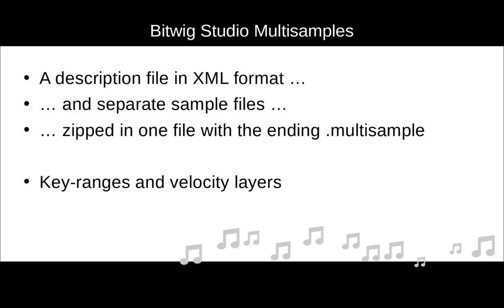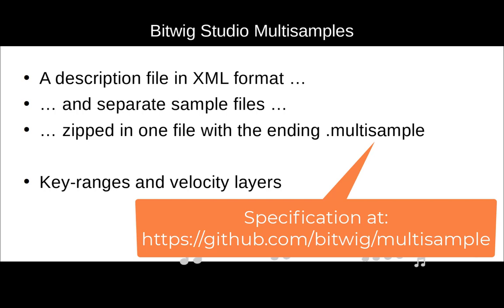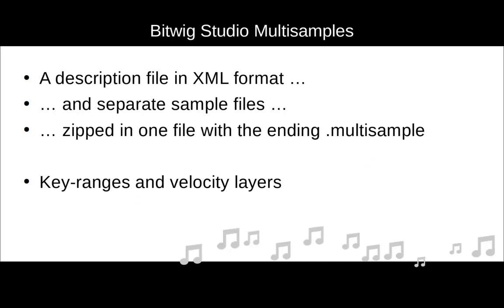Bitwig multi-sample is not really an open format, but the structure is so simple it can be understood just by looking at it. Like SFZ, you have a separate description file and several sample files. The description file is in XML format, which is easy to read. The only thing to know is that the .multisample file is actually a ZIP file — open it with any ZIP tool like 7-Zip and you'll find the XML and the sample files inside. Features are basic: key ranges, velocity layers, and loop information — no further synthesis parameters like filters.